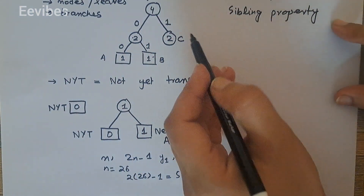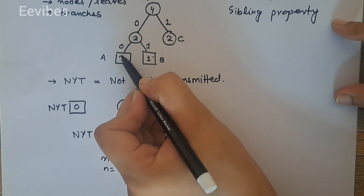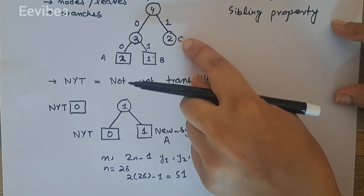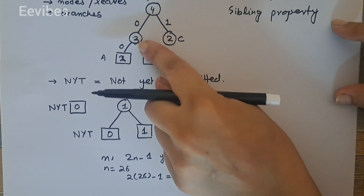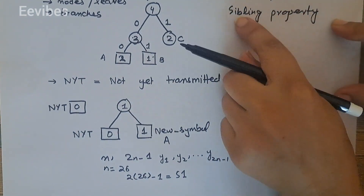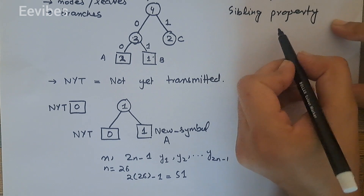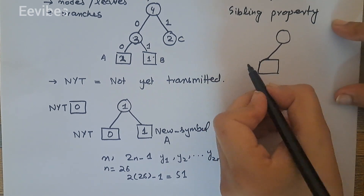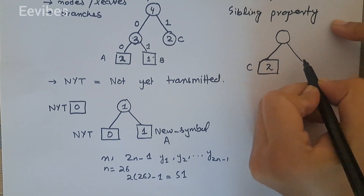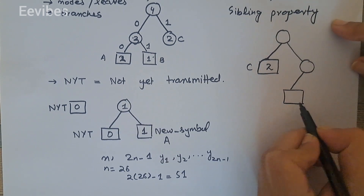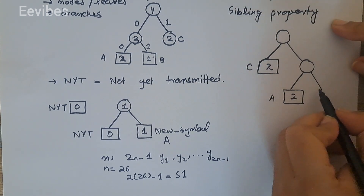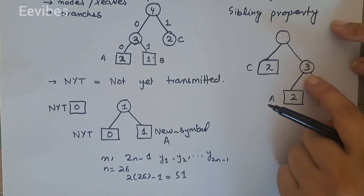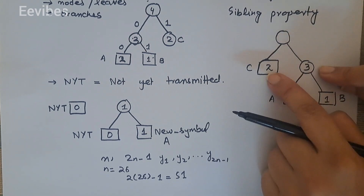For example, if 'a' occurs again in the sequence, its frequency becomes two, and two plus one becomes three. Now the right-hand sibling weight is less than the left-hand sibling's weight. To satisfy the sibling property, we switch positions — placing 'c' on the left-hand side, and switching the positions of 'a' and 'b'. Now the right-hand side node's weight is greater than the left-hand side, so the sibling property is satisfied.